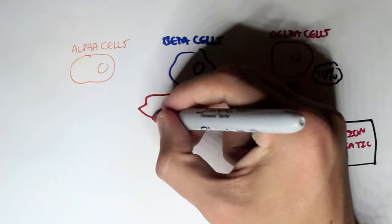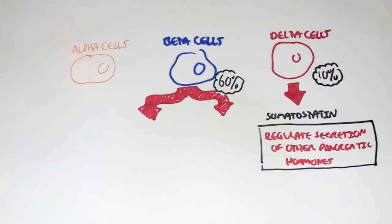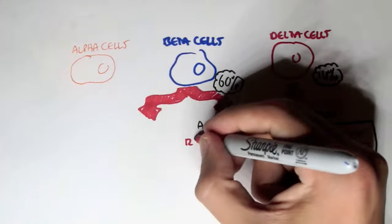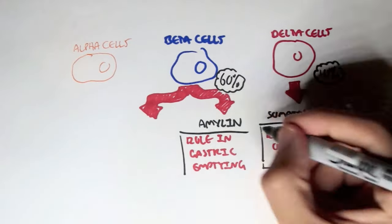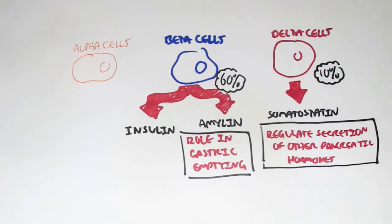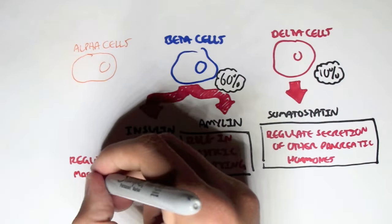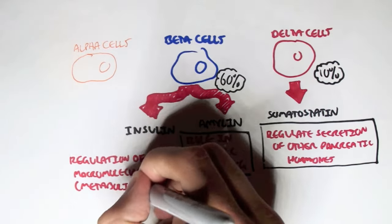And then we have the beta cells, which make up 60% of the cells within the islets of Langerhans. So quite a lot of beta cells in the islets of Langerhans. And the beta cells secrete two important hormones, insulin and amylin. Amylin has a role in slowing down the gastric emptying. So slowing down the emptying of the bolus, or chyme now, from the stomach into the duodenum. And then we have insulin, and its role is in the regulation of macromolecules. So a major role in metabolism.